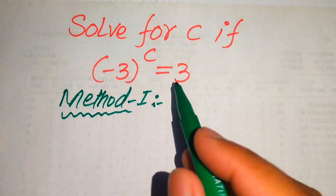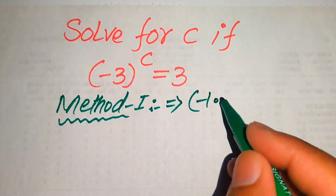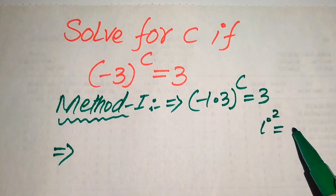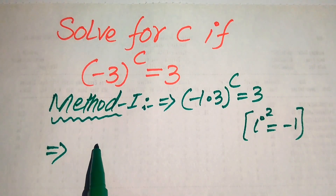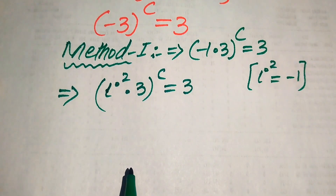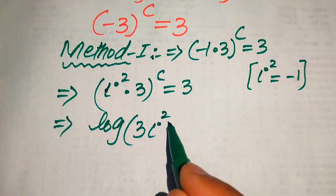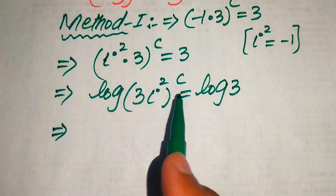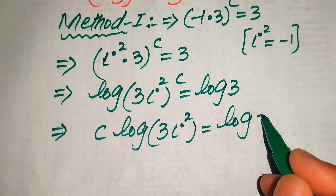In the first method we apply the common logarithm on both sides, but first we rewrite the equation: minus 3 is written as minus 1 multiplied by 3, so the whole expression becomes (−1 × 3)^c = 3. We know that i² equals minus 1, so we substitute to get (i² × 3)^c = 3. We then take the common logarithm on both sides, giving log((3i²)^c) = log(3), and move the exponent c to the front: c · log(3i²) = log(3).